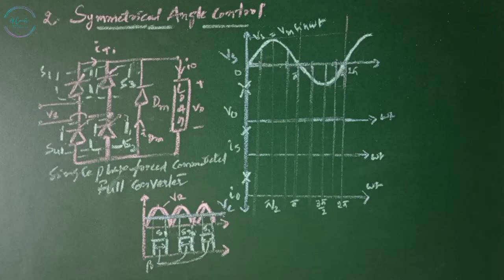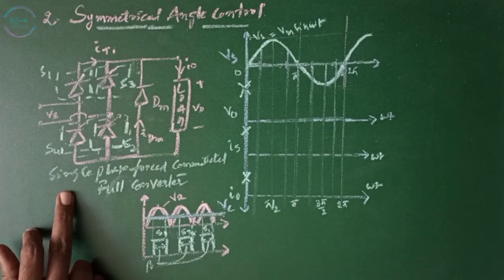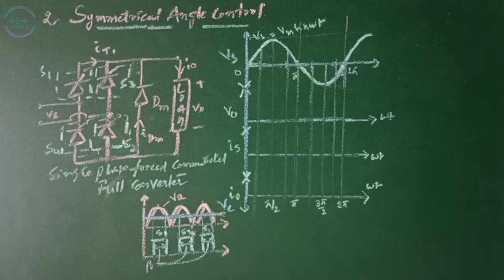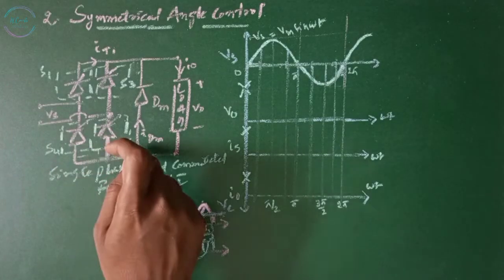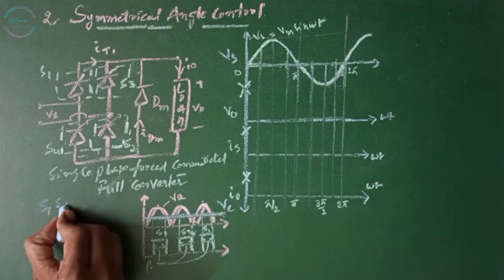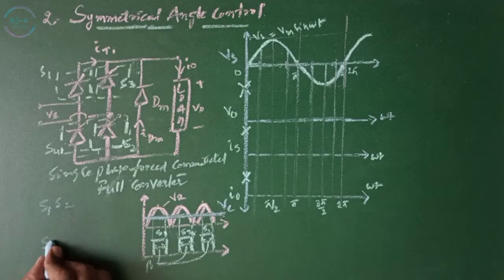The second method is the symmetrical angle control. The symmetrical angle control allows one-quadrant operation. Here we consider a single-phase forced commutated full converter having switches which are GTOs: S1, S2, S3, and S4. In the positive half cycle S1 and S2 will work, and in the negative half cycle S3 and S4 will work.